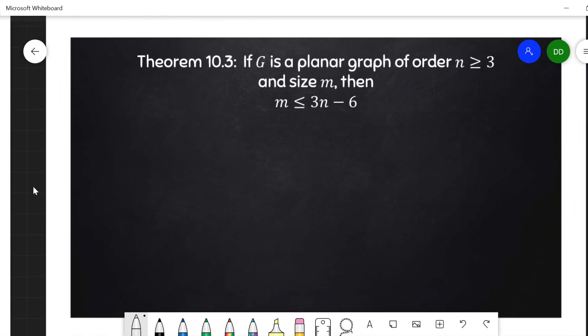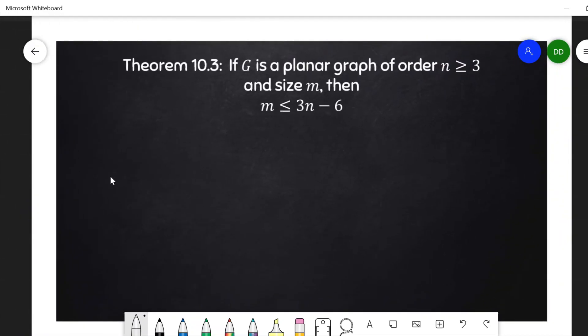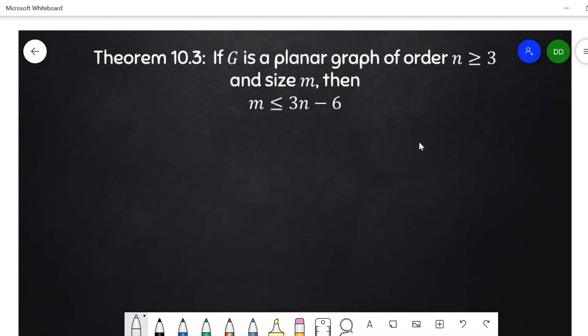So what's the magic number? How many edges can a planar graph have before it becomes automatically non-planar? Well, it turns out if G is a planar graph of order n at least 3 and size m, then m is at most 3n minus 6.